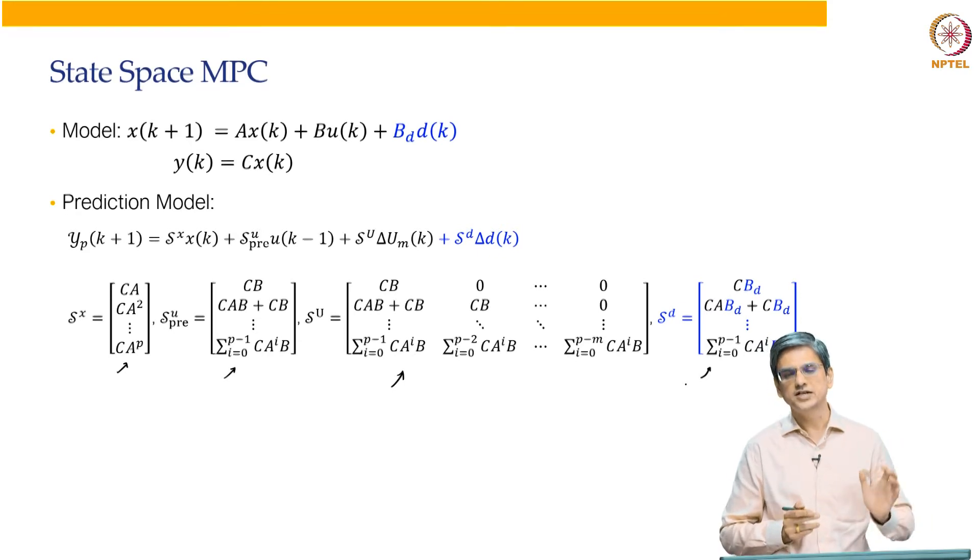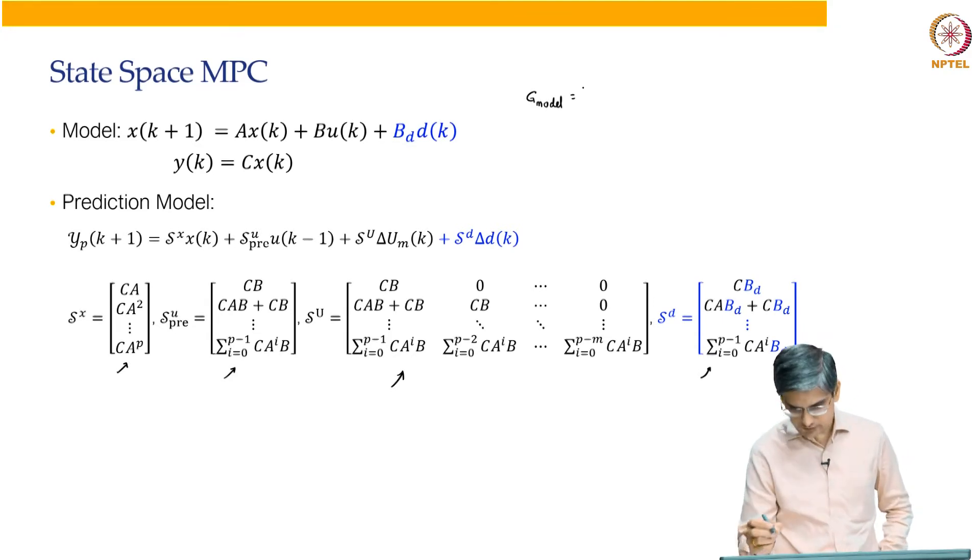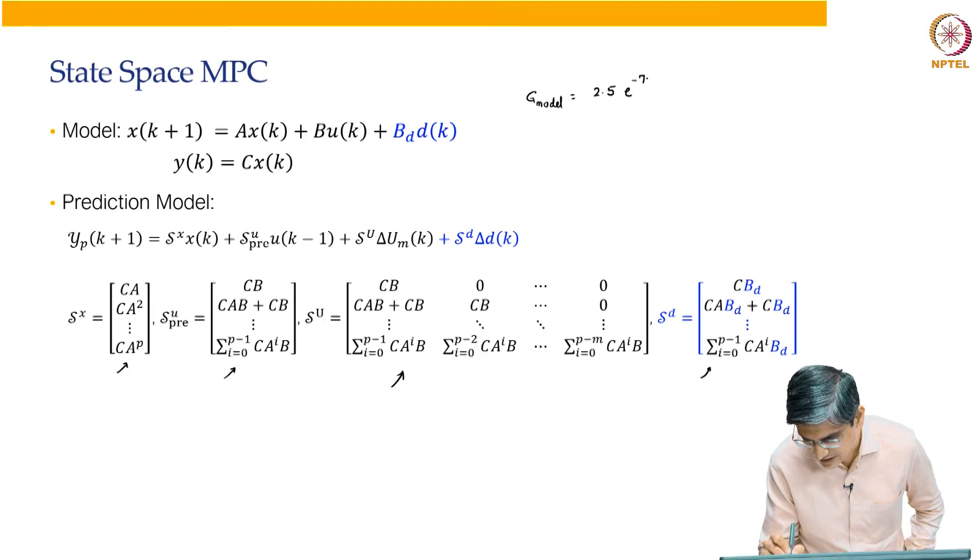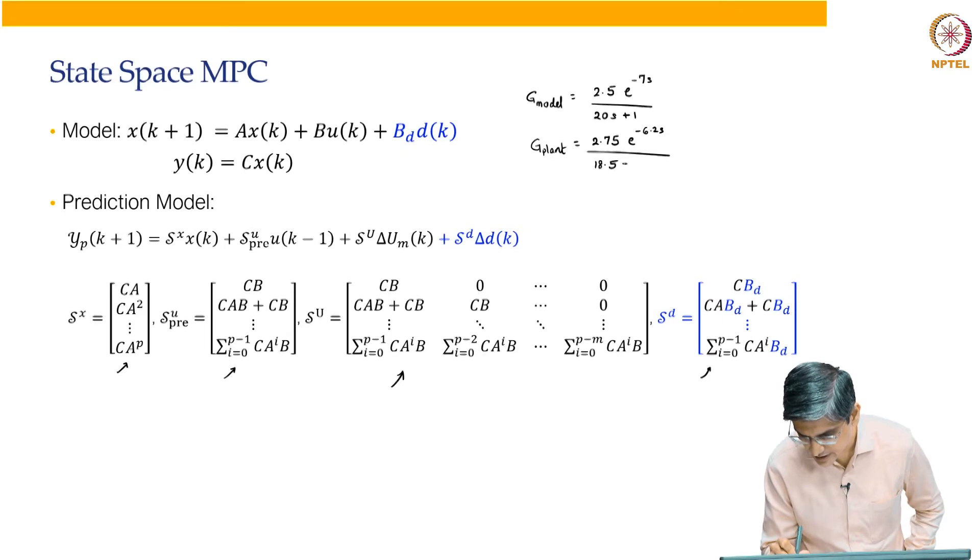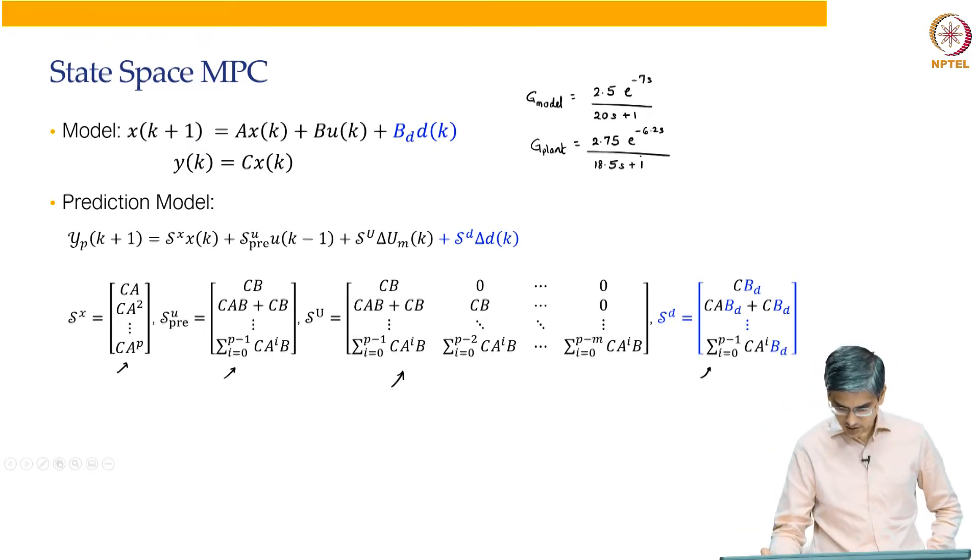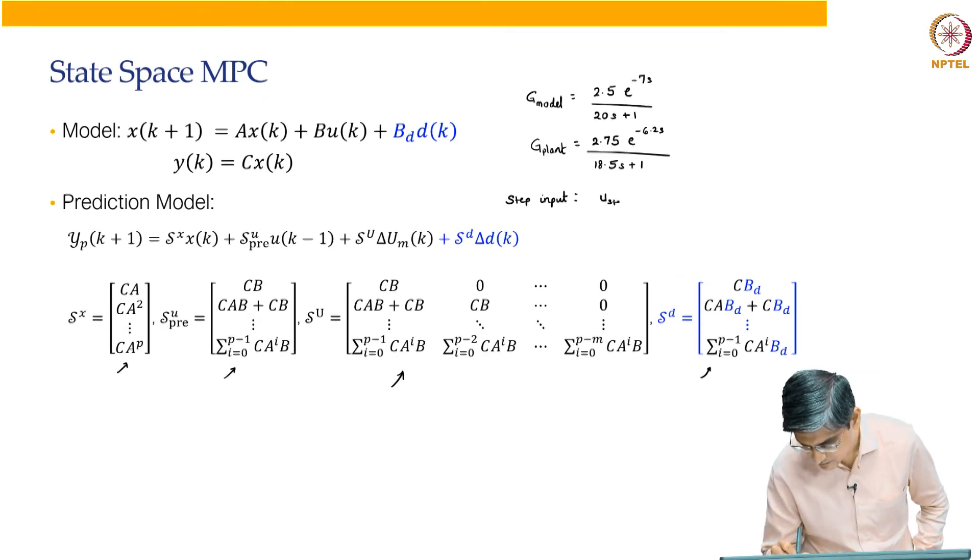Now, this is the issue. For example, if you look at one of the assignments that you have, I am talking about the 2019 batch. The assignment that you have done is that G model was equal to 2.5 e to the power minus 7s. Let us say a step input of U step.